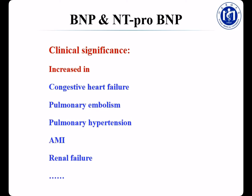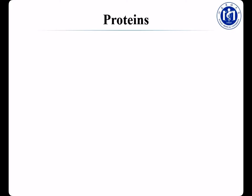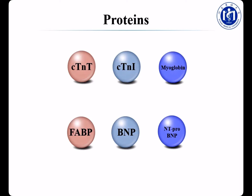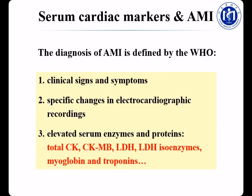The reference interval for BNP is less than 100 pg/mL. For NT-proBNP, the reference interval varies with age: less than 125 pg/mL for patients under 75, and less than 450 pg/mL for patients over 75. These pictures show the machines used in our department to detect BNP. Increased BNP and NT-proBNP are seen in patients with congestive heart failure, pulmonary embolism, pulmonary hypertension, AMI, and renal failure. Both BNP and NT-proBNP are clinically used for the diagnosis, monitoring, and prognosis of CHF. This table summarizes the differences between BNP and NT-proBNP — you should memorize this table. To summarize the proteins: troponin T, troponin I, myoglobin, and FABP are useful markers for AMI; BNP and NT-proBNP are markers for heart failure.